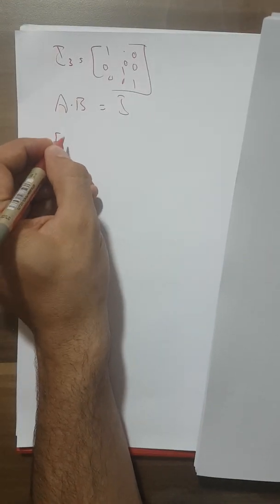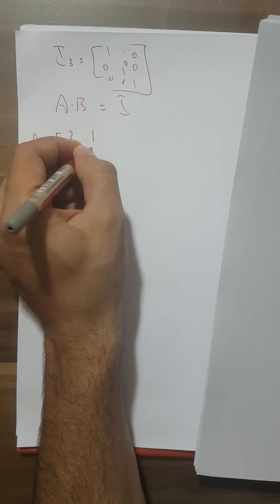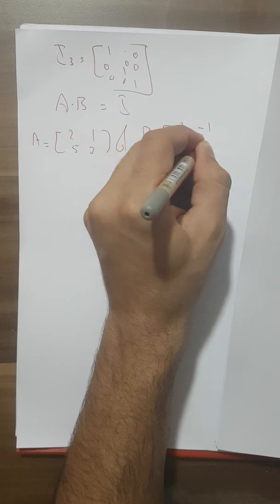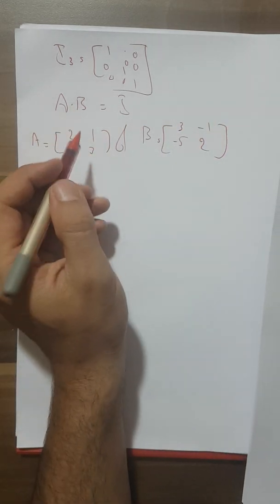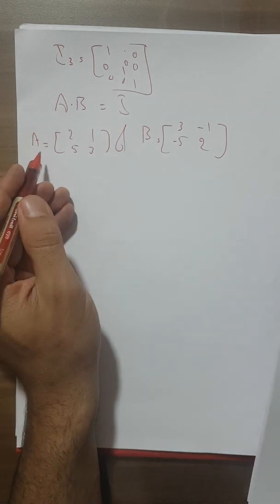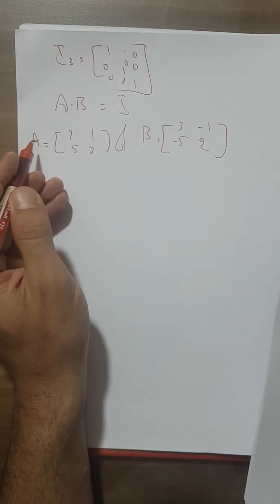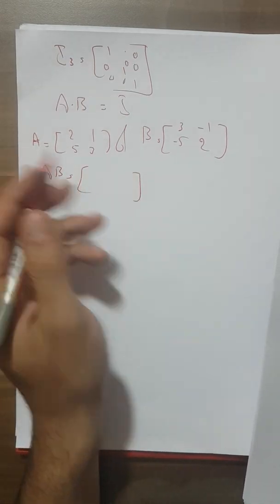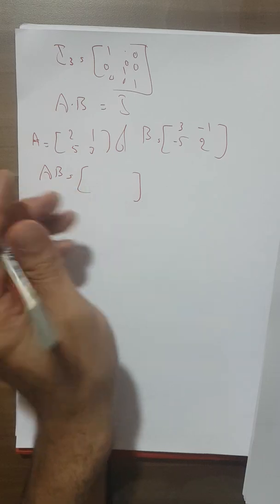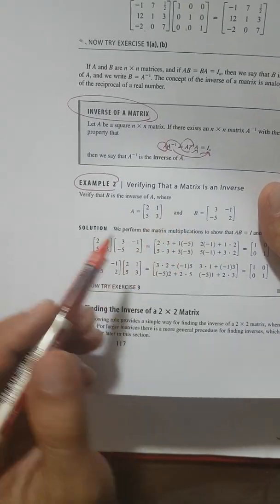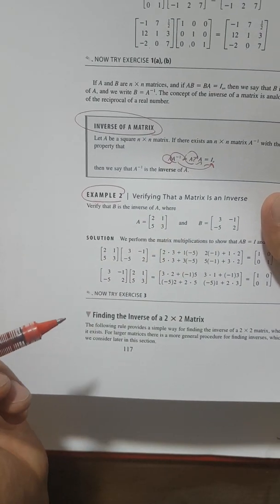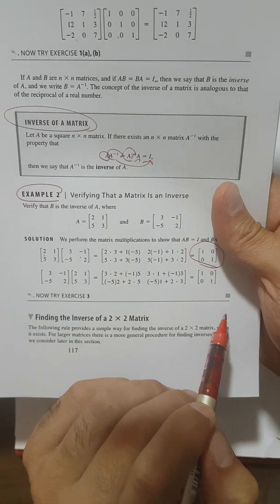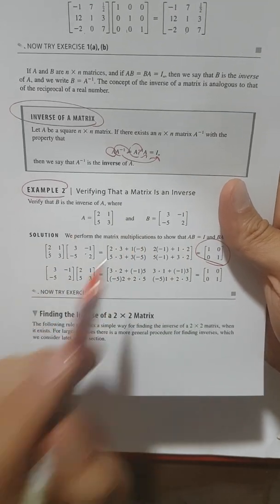For example, A equals [2,1; 5,3] and B equals [3,−1; −5,2]. If I ask whether A and B are inverses of each other, we should multiply them. The result will tell you whether the two matrices are inverses or not. When we multiply them, we get the identity matrix I2, so A and B are inverses of each other.